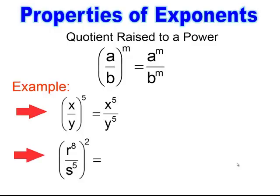Be careful when it's a combination of properties — I have powers inside and I have the quotient raised to a power. That's going to be the combination of the quotient raised to a power and the power to a power rule. So you take that power on the outside and multiply it to the powers inside, and you end up with r to the 16th over s to the 10th.